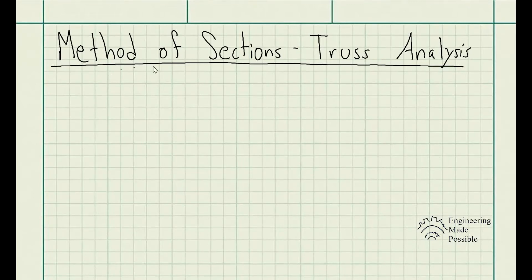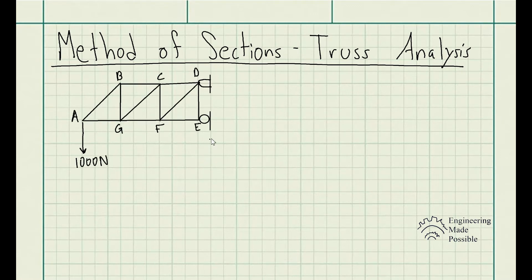Today we'll be going over the method of sections when it comes to analyzing trusses. This method is used to solve for the forces in specific members of a truss. For example, if we have a truss with its appropriate supports and we want to find the force in member GC, if we were to apply the method of joints, we would basically have to do it multiple times until we get to member GC, which would be too time consuming.